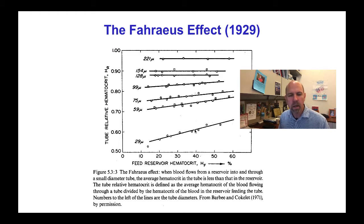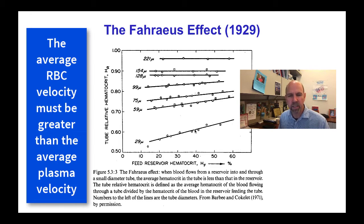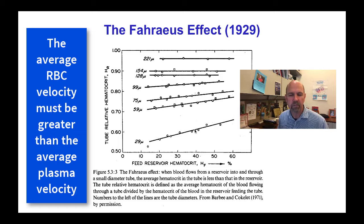The answer to this question must be that the average velocity of the red blood cells is greater than the average velocity of the plasma, so that in taking a snapshot of red blood cells flowing through the thin tubes, they spend less time in the tube than the plasma on average, and therefore the fraction of red blood cells in the tube is less than the fraction going into and leaving the tube.